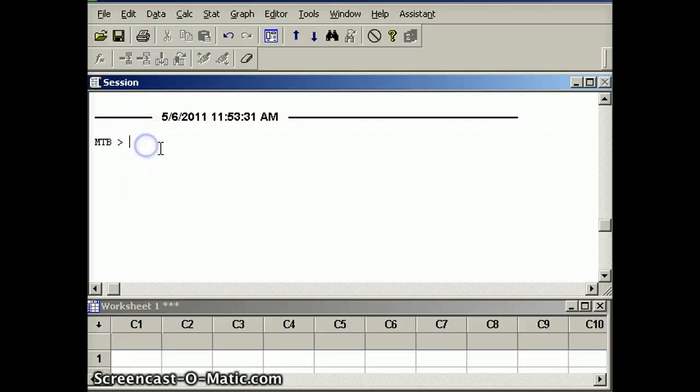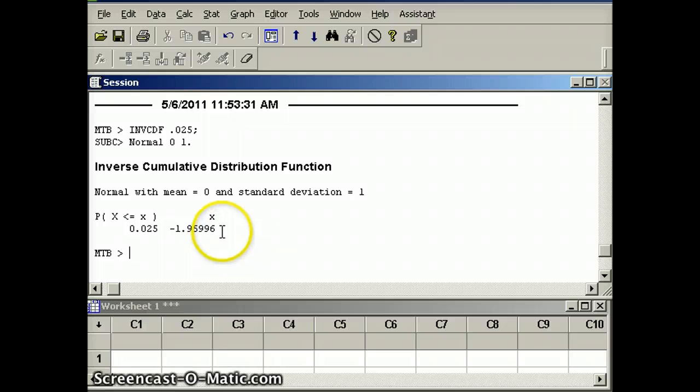So our command is invcdf, we're using 0.025. And of course z is a normal 0.01. The number that comes back is negative 1.95996 or negative 1.96. We typically use the positive version of that, so that's what we will use for z alpha by 2.